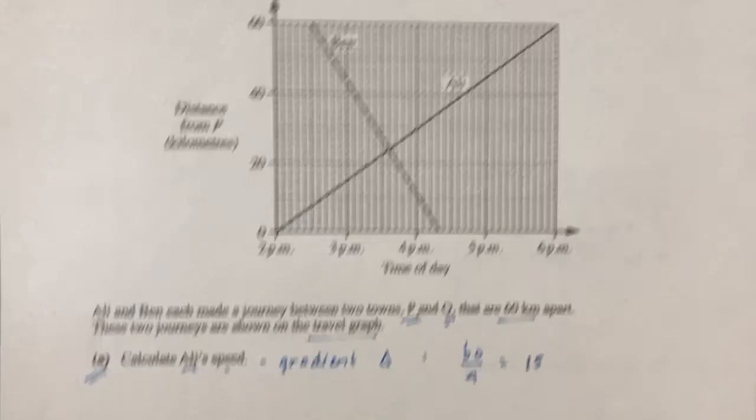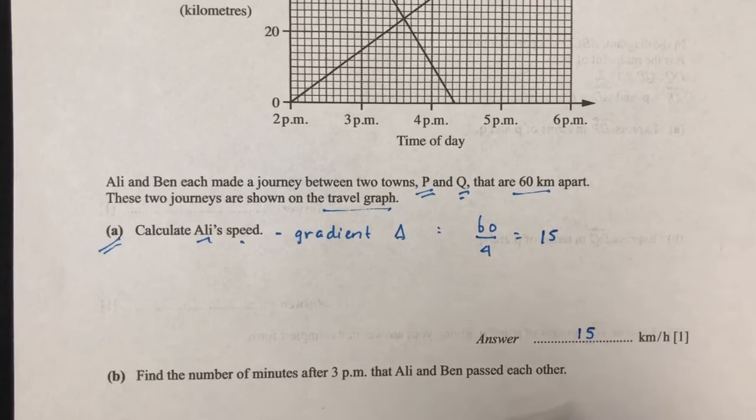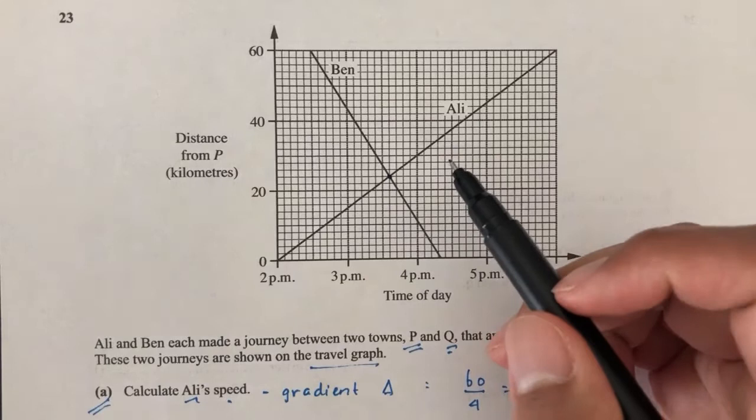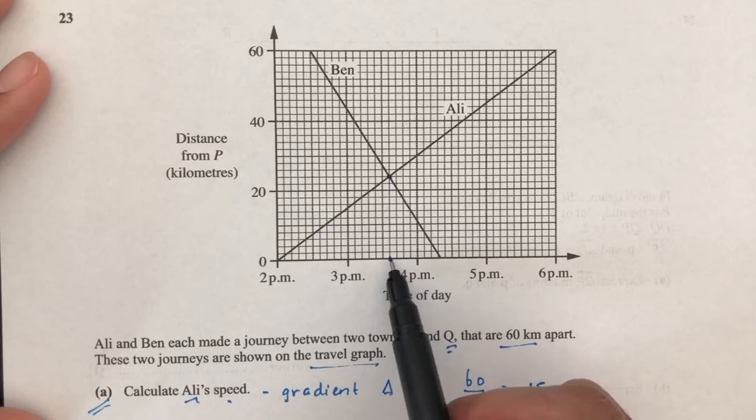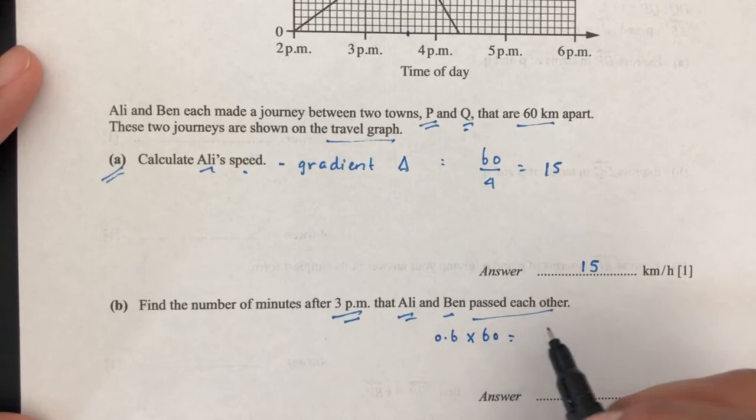For part B, find the number of minutes after 3 p.m. that Ali and Ben passed each other. Reading from the graph, they meet at 0.6 hours after 3 p.m. So 0.6 times 60 equals 36 minutes. They passed each other 36 minutes past 3 p.m.